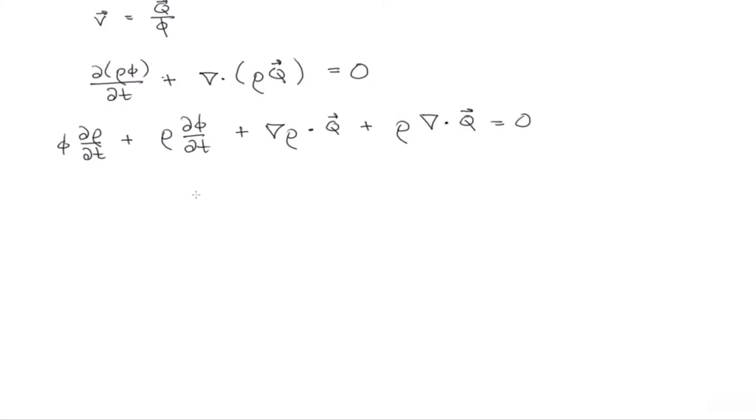Now, it should be understood that the density is actually a function of pressure and space. Likewise, the porosity is a function of pressure and space. And so with this knowledge, everywhere that I have a density or everywhere that I have a porosity, I'm then going to use the chain rule in such a way that I end up with gradients of pressure, spatial and temporal gradients of pressure.